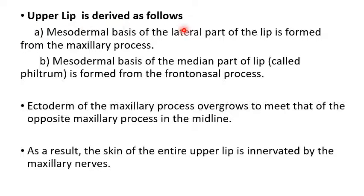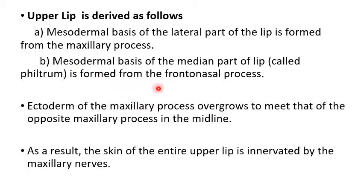Now the upper lip is derived as follows: the mesodermal basis of the lateral part of the upper lip is formed by the maxillary process. The mesodermal basis of the median part of the upper lip — that is the philtrum, the depressed area — is formed by the frontonasal process. So the lateral part of the upper lip is formed by the maxillary process, while the mesodermal basis of the median part is derived from the frontonasal process.